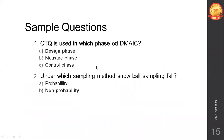Here are two sample questions to give you an idea of what to expect. First: the Critical to Quality Tree (CTQ) is used in which phase of DMAC? It's used in the Define phase — you should know which top management tool is used in which phase, as given in the textbook. Second: under which sampling method does snowball sampling fall? It comes under non-probability sampling technique. These are the types of questions you can expect in the exam.